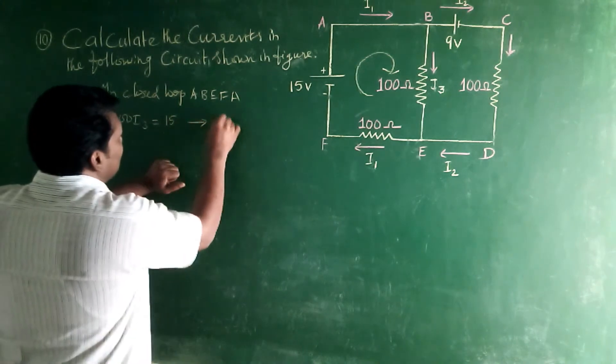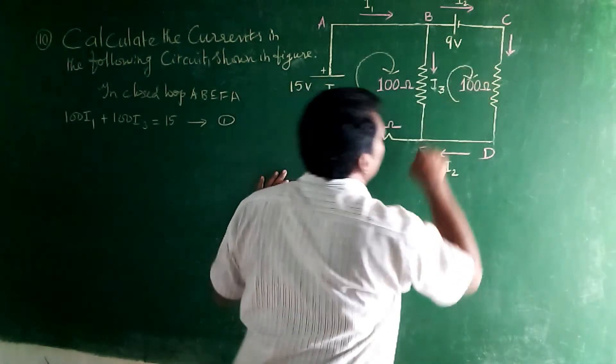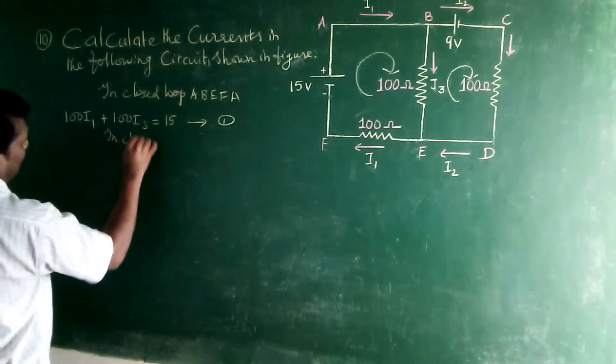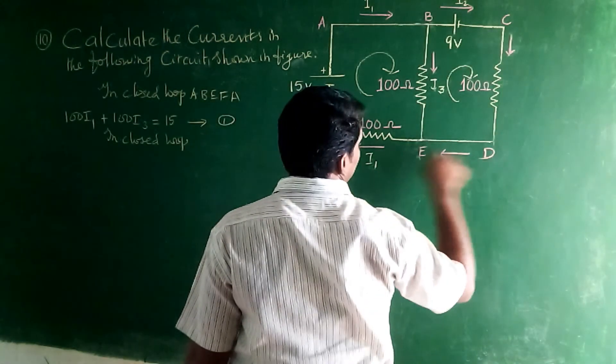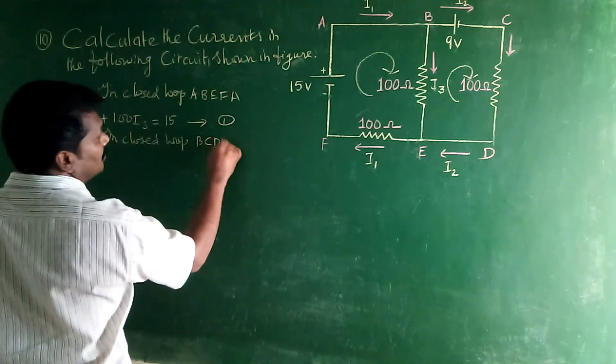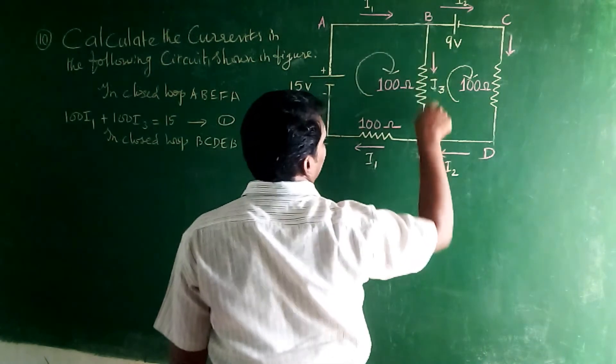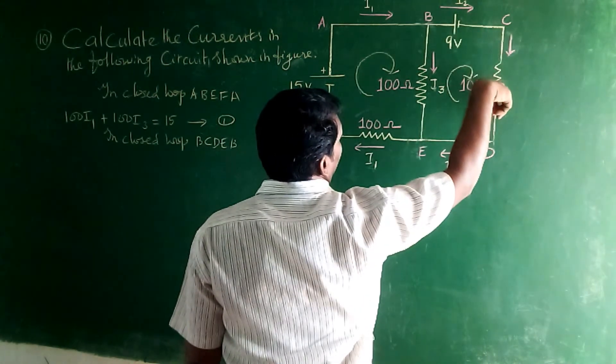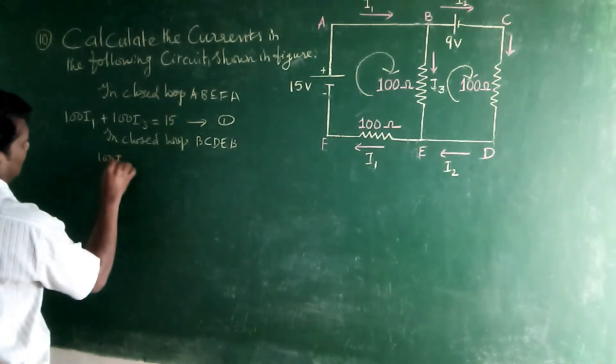You can see the loop number 1. And another loop. In this loop, B, C, E, B. This is the loop B, C, D, E, B. This is the current I3.